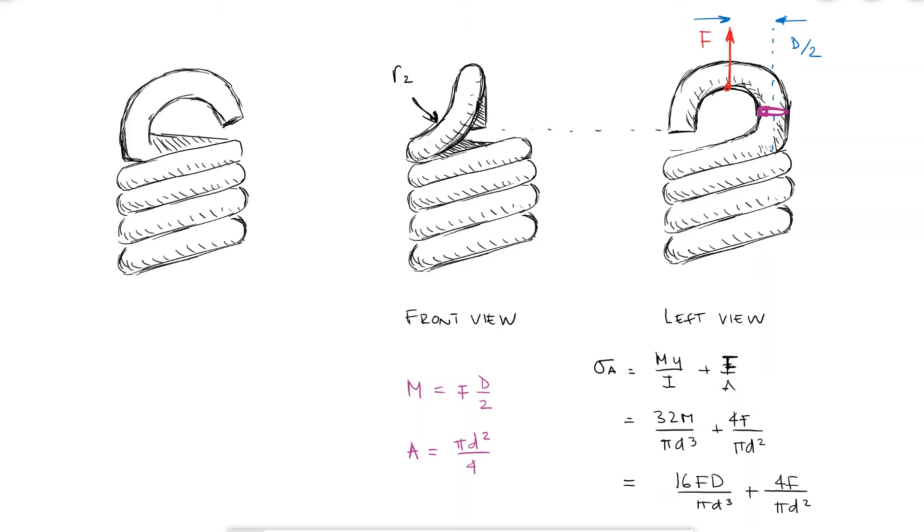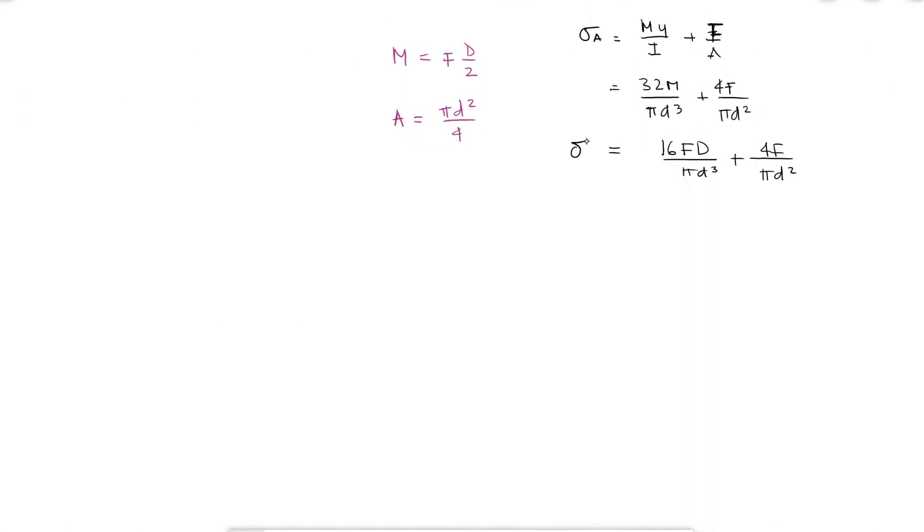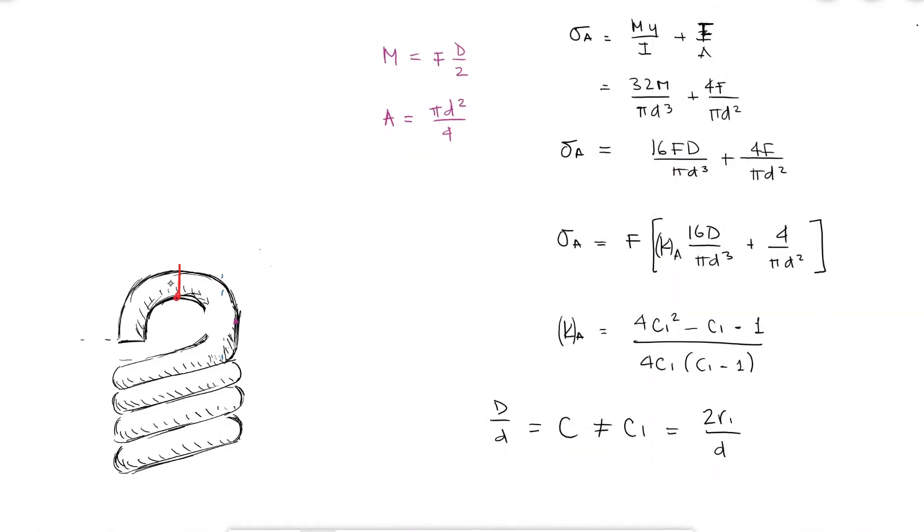Just like we added the curvature correction factor to the shearing stress of compression springs, the maximum normal stress also needs to be corrected using a bending stress correction factor for curvature KA, which depends on C1, which in turn is a curvature coefficient unrelated to the spring index capital C and depends on the radius of the hook itself.